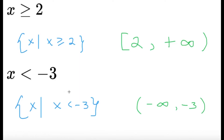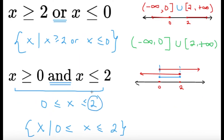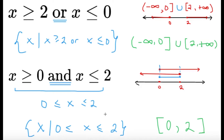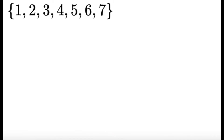For the interval notation of 0 ≤ x ≤ 2, we have both a lower bound (0) and an upper bound (2), and both are included because of the equal signs in the inequality. So both sides use brackets: [0, 2]. These two notations are equivalent — use whichever the problem or exam requires.